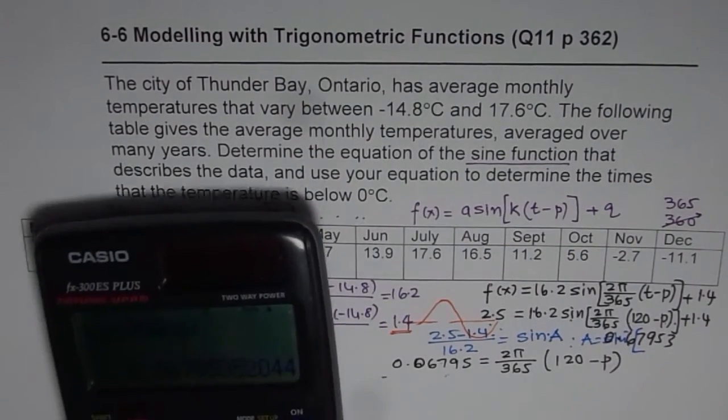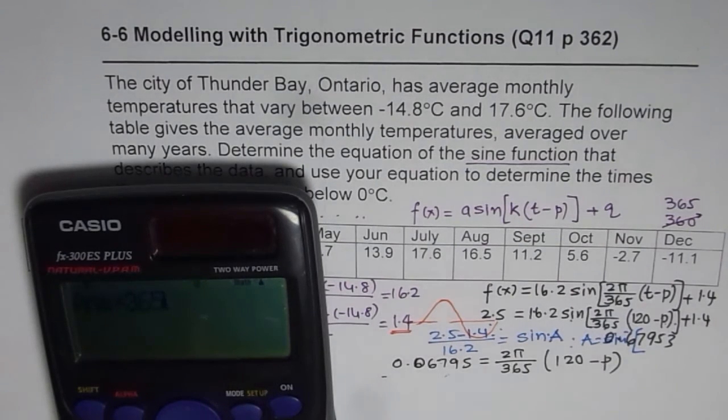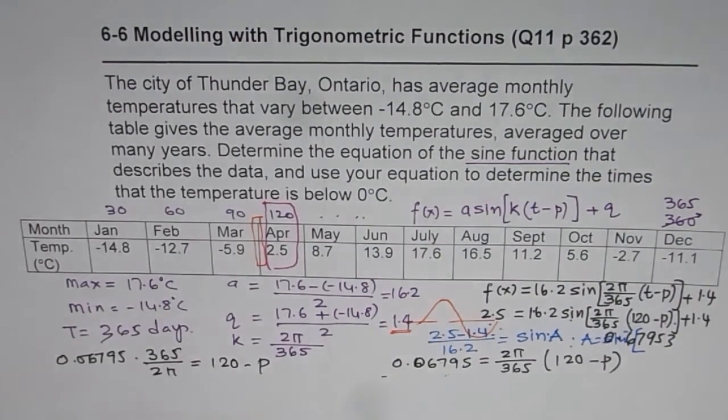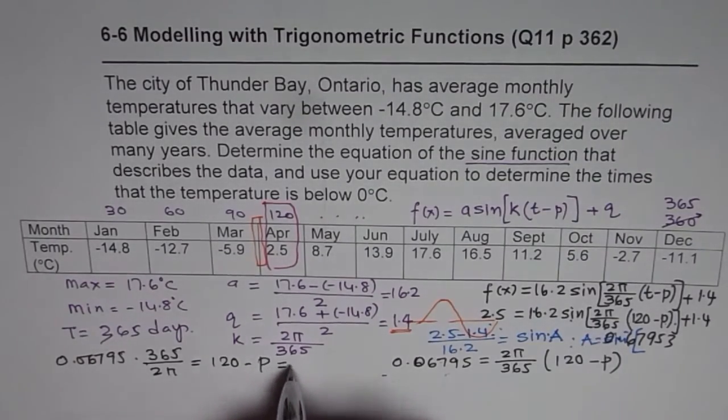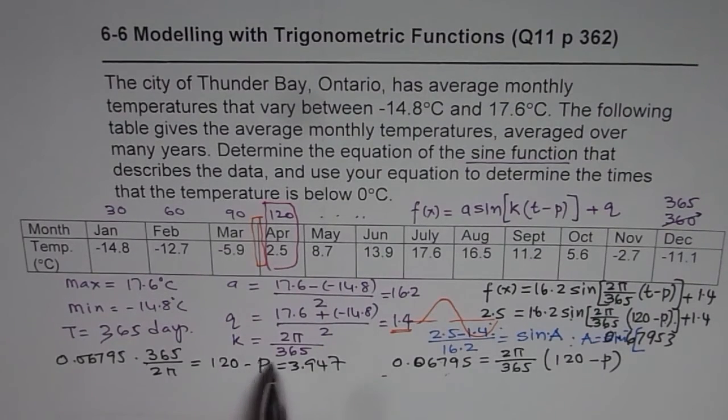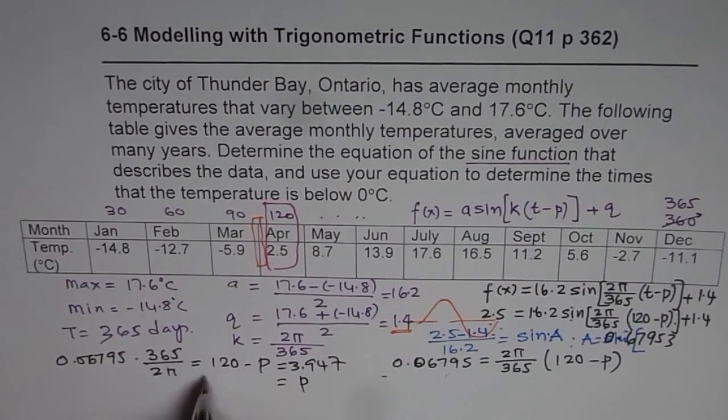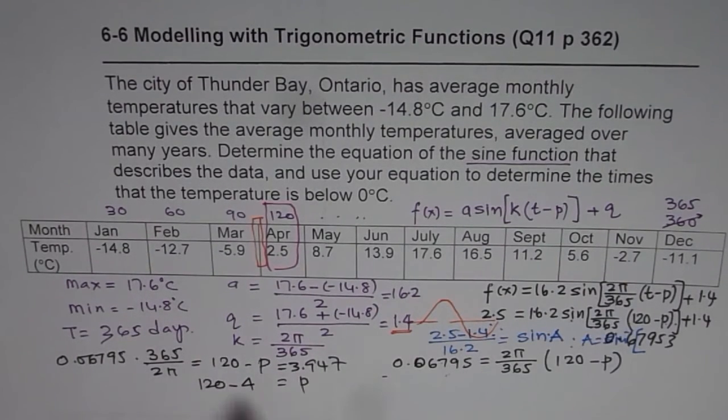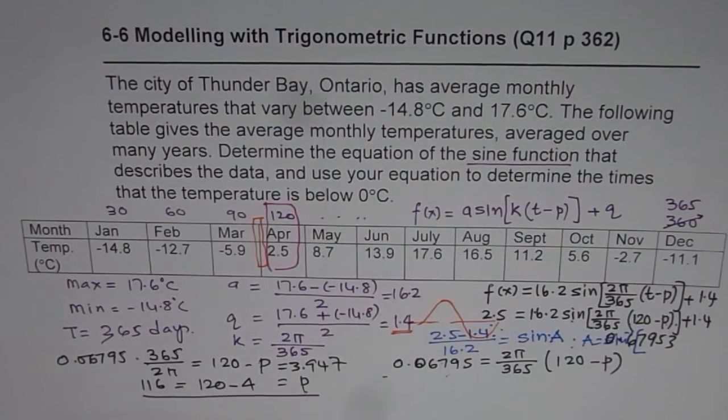Bring p to the right side so that you get p, and we get 120 minus, let me write this as 4. 3.9 is 4. So 120 minus 4 is 116. So this is what p is. So once you get the value of p, substitute.